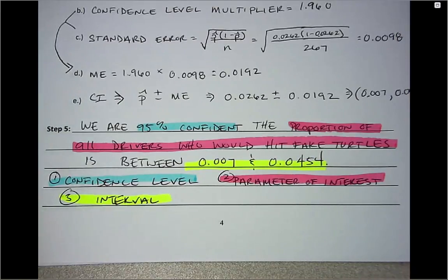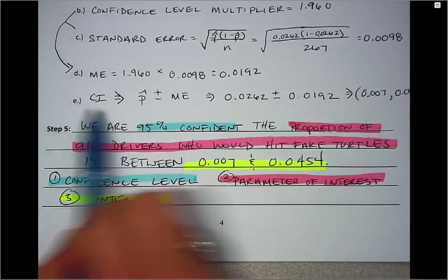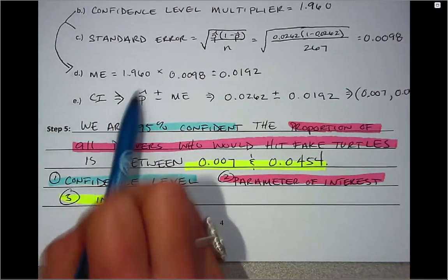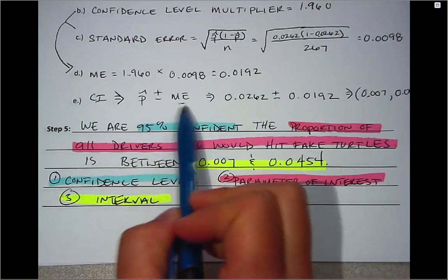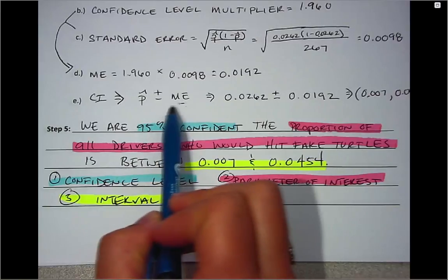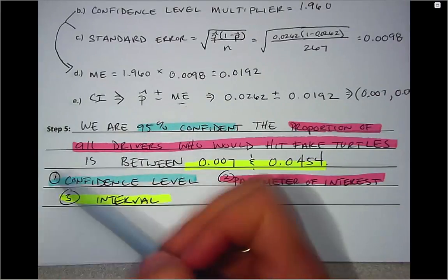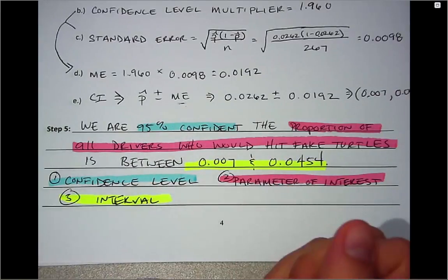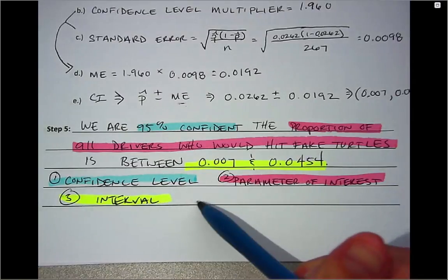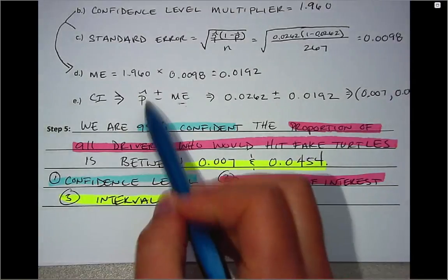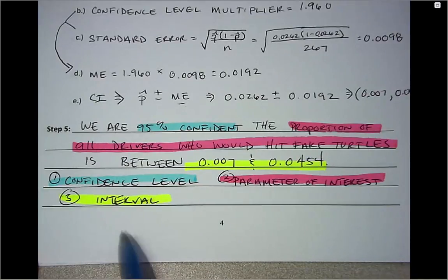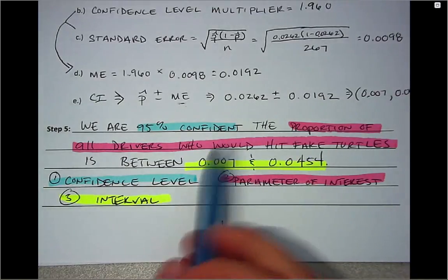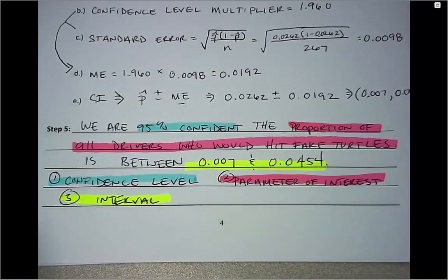One thing I want to point out is that these confidence intervals are symmetric about P-hat, so there's the same amount of area below as above because we're adding and subtracting the same margin of error. However, when you calculate a confidence interval you're saying that somewhere in the interval you're hoping P falls. P is the value we're trying to make an inference on — we're not sure exactly where in the interval it is, just somewhere between 0.007 and 0.0454.